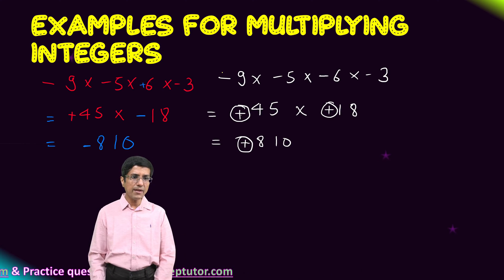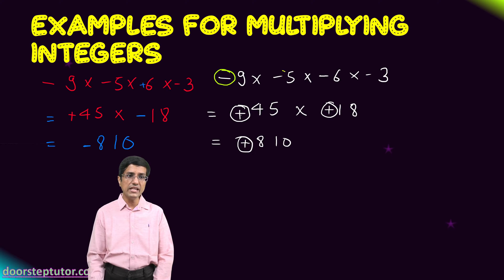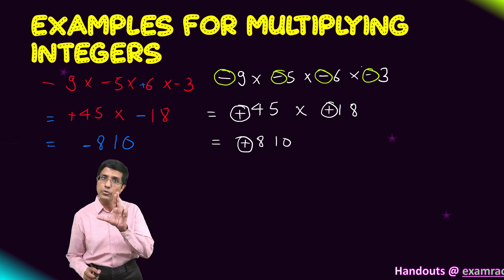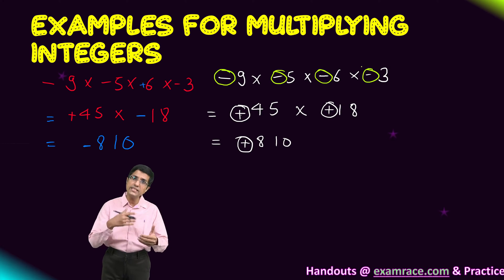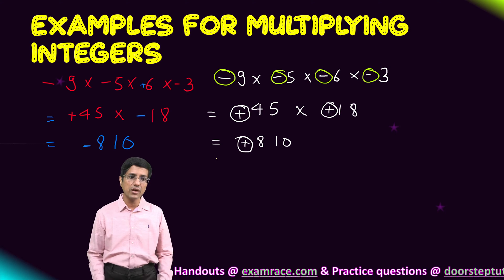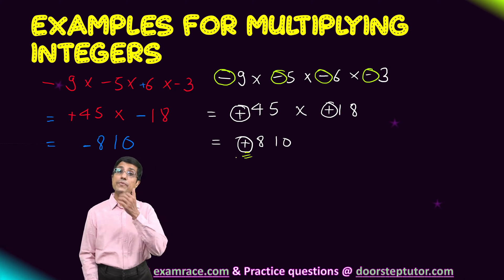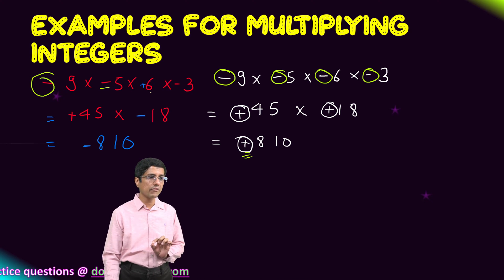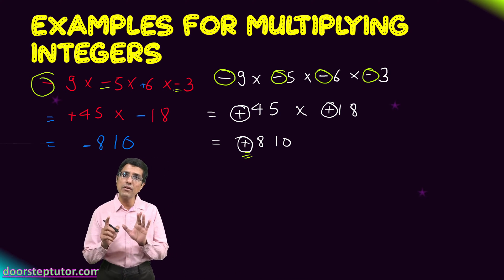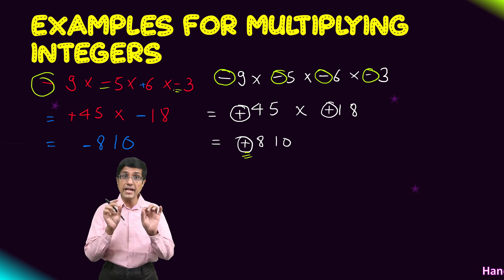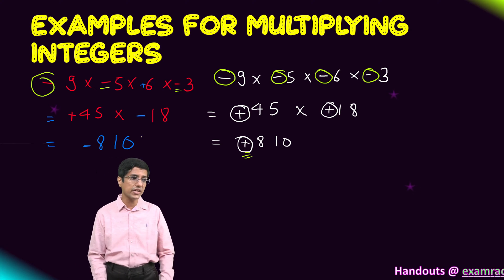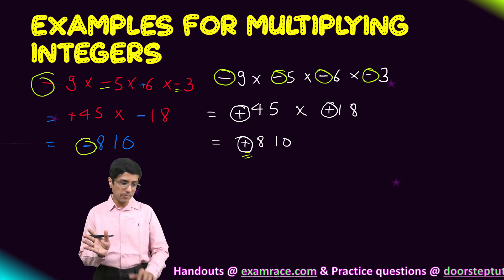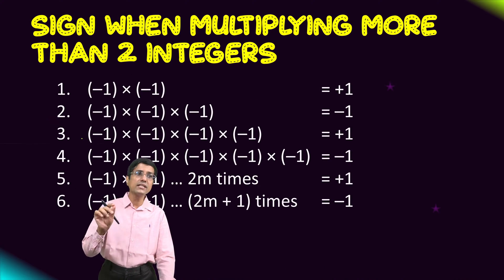Here is a further generalized rule: if I have an even number of minus signs, they will all cancel each other out in pairs and my answer will be positive. If I have an odd number of minus signs, after forming all the pairs there will be one extra negative sign left over, and that extra negative will travel to the final answer, making it negative.